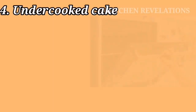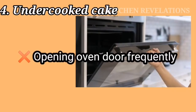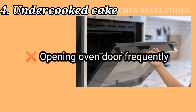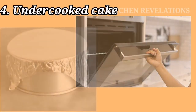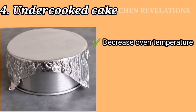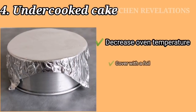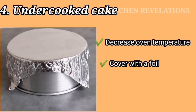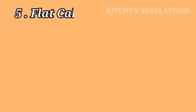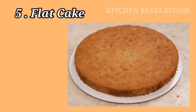The next mistake is an undercooked cake. As explained earlier, this can also happen when you open the oven door very frequently. There is a trick to save your undercooked cake: decrease the oven temperature by 20 to 25 degrees Celsius, cover the top portion of your cake with foil, and continue to cook for a few minutes until a toothpick inserted through the middle comes out clean.